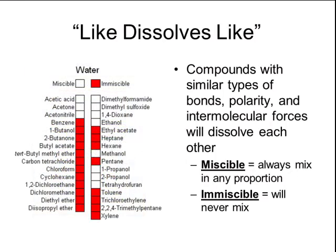On the left is a chart of substances that are miscible and immiscible in water. Alcohols are usually miscible in water, like methanol, ethanol, and propanol. However, butanol is immiscible in water. The reason is the number of carbons: methanol has one, ethanol has two, propanol has three, but butanol has four carbon atoms. This creates a larger nonpolar region in the alcohol molecule. That nonpolar region has weaker London dispersion forces than the hydrogen bonding of water, and therefore butanol is immiscible.